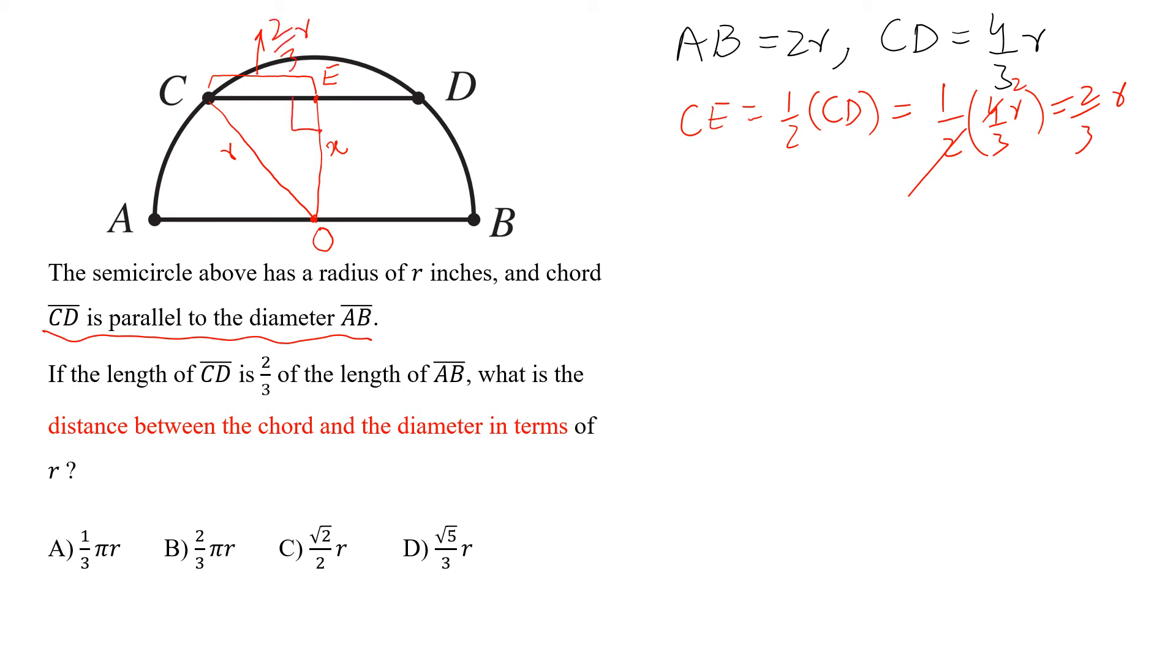Now look at this triangle. This triangle is a right angle triangle. And by Pythagoras theorem, we can write x² + (2/3r)² = r².